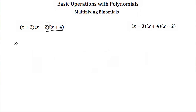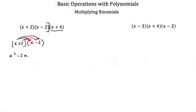So x plus 2 times x minus 2. I'm going to take this x and multiply it by both of the terms in the second binomial, and then take this 2 and multiply it by both terms as well. So x times x is x squared, x times negative 2 is negative 2x, 2 times x is positive 2x, and positive 2 times negative 2 is negative 4.